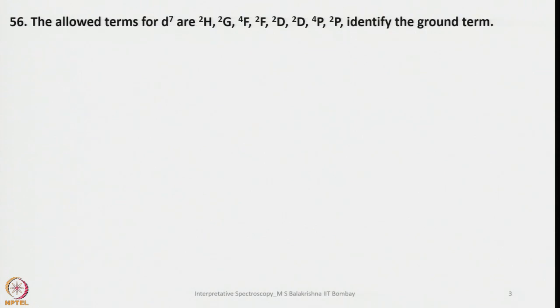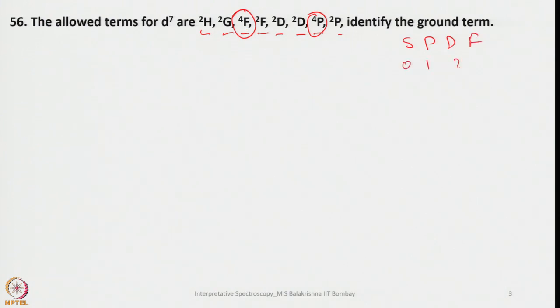Another question: the allowed terms for D7. If you calculate the allowed transitions and find the term symbols, they are given as 2H, 2G, 4F, 2F, 2D, 2D, 4P, 2P. Among them, identify the ground term. By inspection, the one with the highest spin multiplicity (2S+1) value is the ground term. If two terms have the same 2S+1, then consider the highest L value — S, P, D, F correspond to L = 0, 1, 2, 3 respectively.